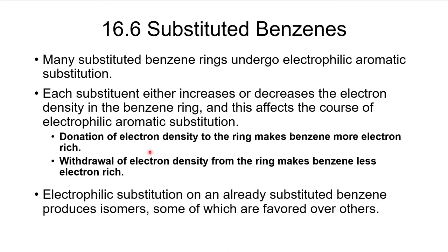Another important consideration is that on a mono-substituted benzene ring there are three different possible positions for substitution: ortho, meta, and para. We're going to discuss which positions are favored for different substituents and why.